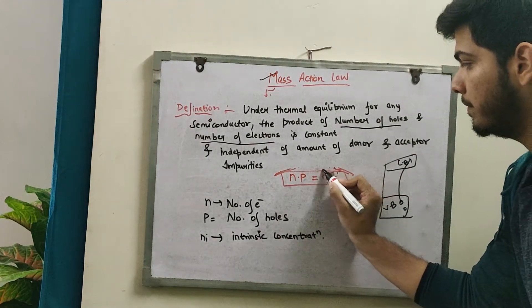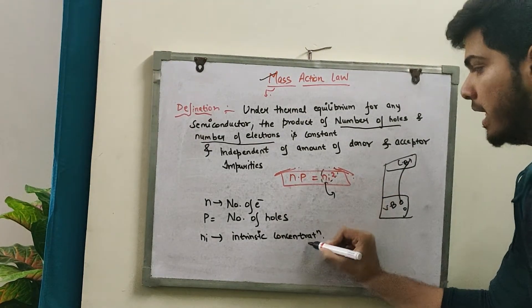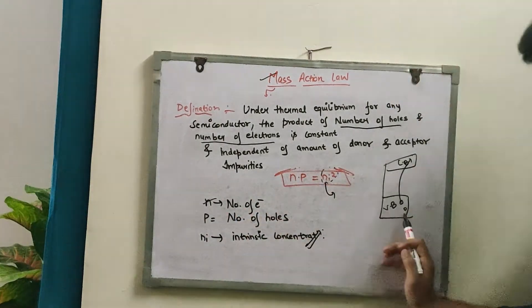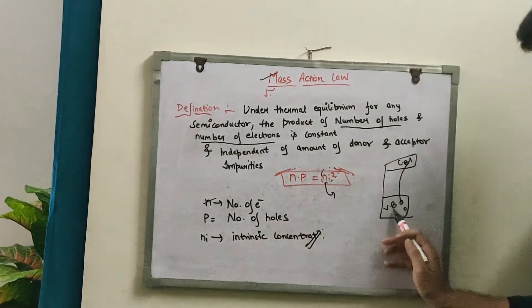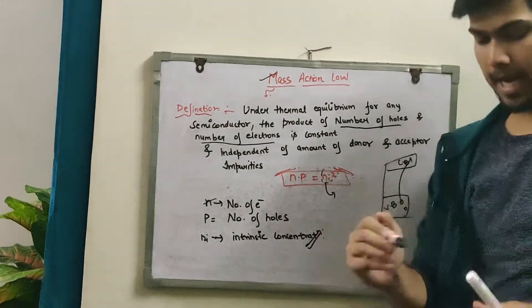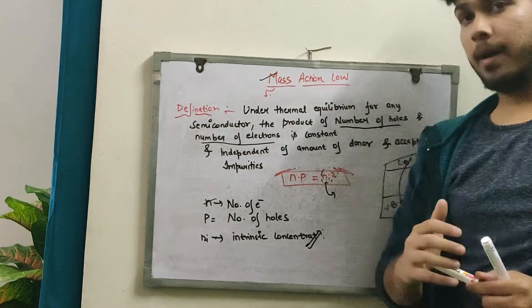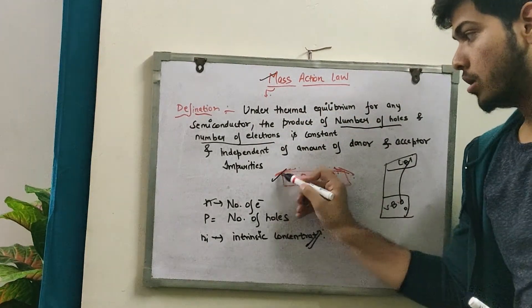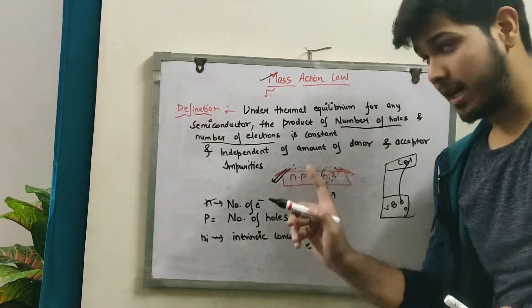We have said that it is n_i, where n_i is nothing but intrinsic concentration. n is number of electrons, p is number of holes, and n_i is intrinsic concentration. This law is also valid for extrinsic semiconductors as well.